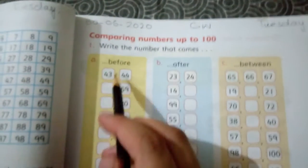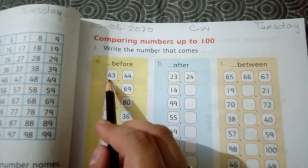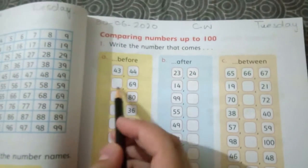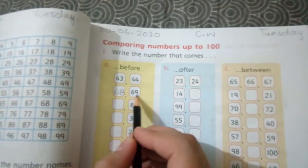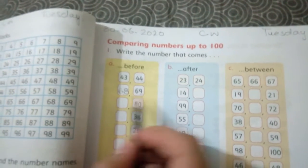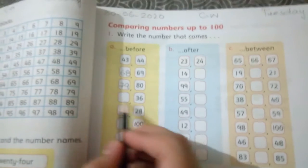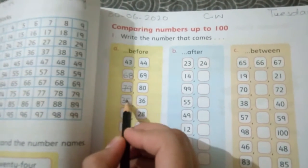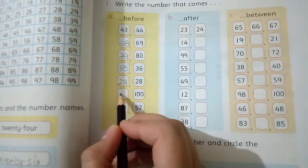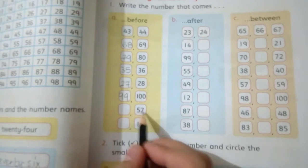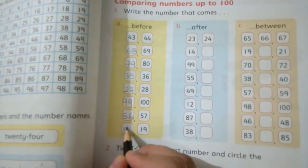Write the number that comes before. Before means what number comes before another. Before 44 is 43. Before 69 is 68. Before 80 is 79. Before 36 is 35. Before 28 is 27. Before 100 is 99. Before 57 is 56. Before 19 is 18.